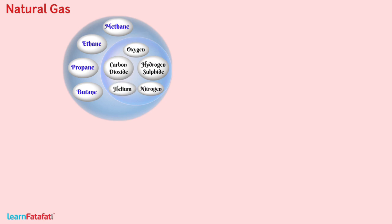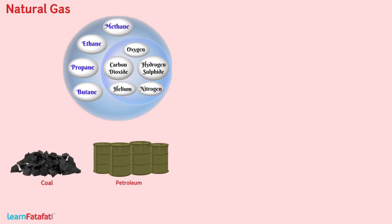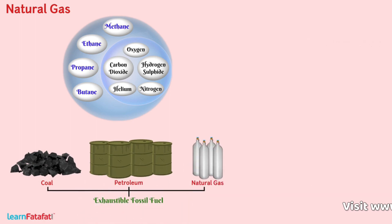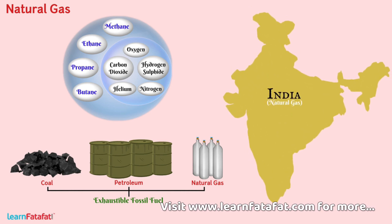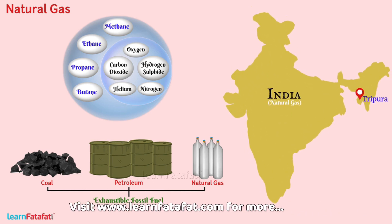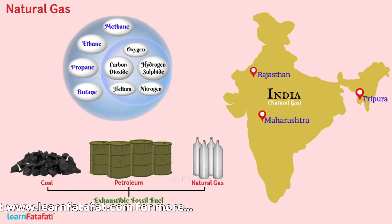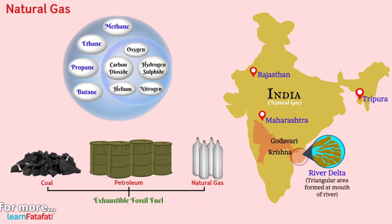Like coal and petroleum, natural gas is also an exhaustible fossil fuel. In India, natural gas is found in Tripura, Rajasthan, Maharashtra and in the Krishna Godavari Delta.